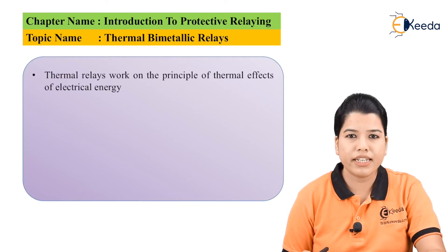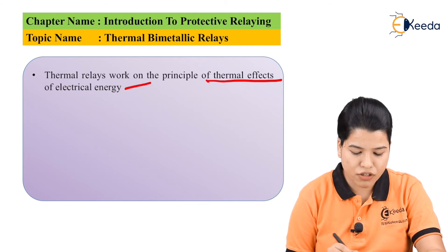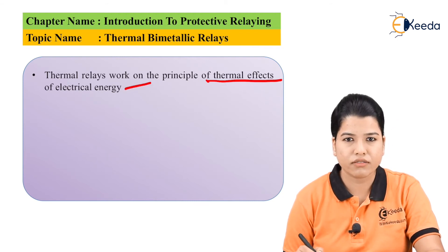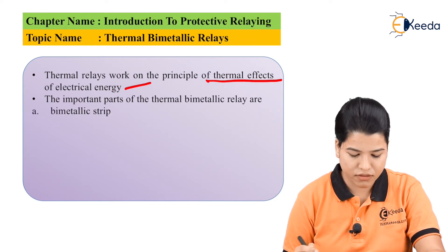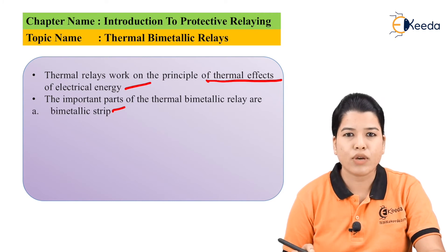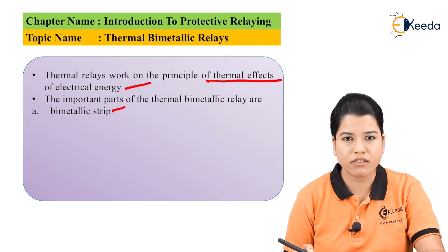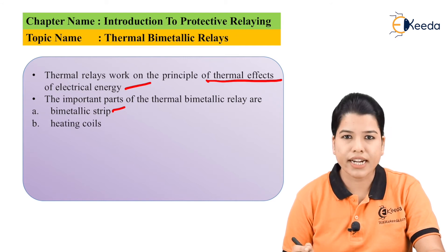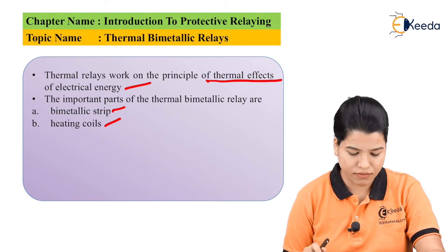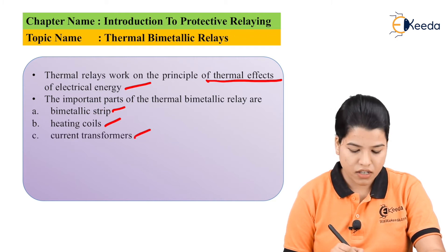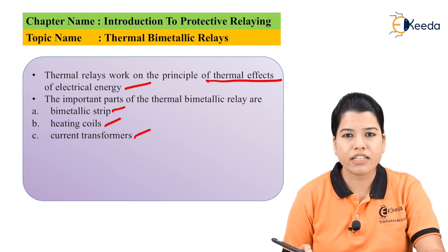Thermal relays work on the principle of thermal effects of electrical energy. The important parts of the thermal relay are: first, the bimetallic strip, which as the name suggests is made up of two metals; second, the heating coil, which is used to sense the temperature; and third, the current transformer, which supplies the current to the heating coil.